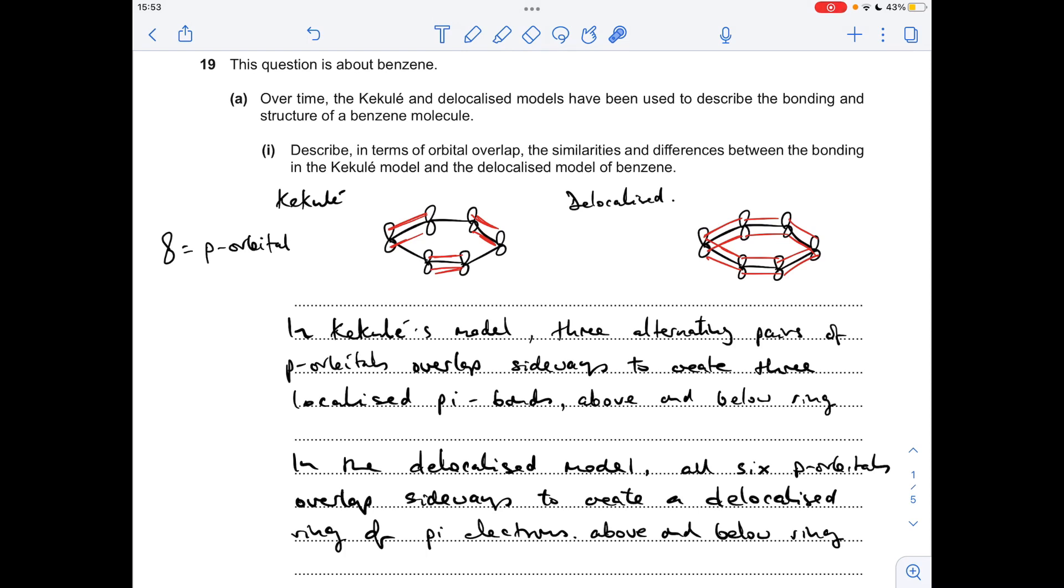In the case of the delocalised model all six p orbitals overlap sideways to create a delocalised ring of pi electrons. It's delocalised because the electrons are shared between more than two carbon atoms, shared between all six.